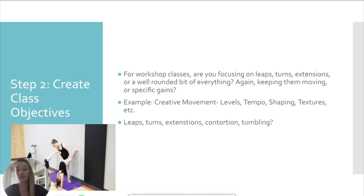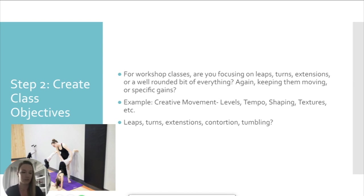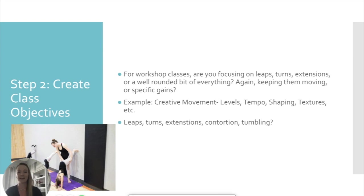Step two is to create your class objectives. For creative movement, an objective can be catered to levels, tempo, shapes, textures, or improvisation. For adult acro contortion, you could focus on the shoulder girdle, back strengthening, or core — catering to different muscle groups. For workshops, decide whether you're focusing on leaps, turns, extensions, or a well-rounded mix. Think about whether you want specific gains or just to keep them moving.